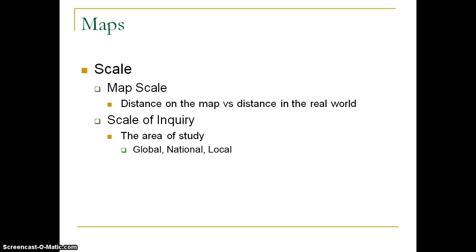The second type is what's called scale of inquiry. I might argue this is more important for the study of human geography, because what we're looking at with scale of inquiry is deciding on what is our area of study — what area are we going to look at in order to have some findings about that particular area? Because as our scale of inquiry changes, so does our understanding of the data being represented to us on the map. We can look at a variety of different areas of study: global, national, or local. Are we looking at the whole world and its statistics? Are we looking at a national scale, just one country? Or are we looking at the local scale?